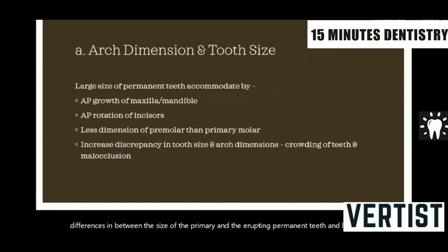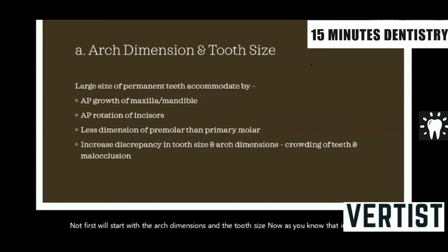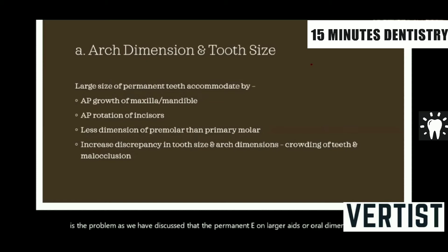We will start with arch dimensions and tooth size. In the mixed dentition period, the permanent teeth have started to erupt. The problem, as we have discussed, is that permanent teeth are larger in overall dimensions compared to primary teeth. To accommodate these teeth, the jaws have to increase in size. The jaws will accommodate the larger permanent teeth by increasing in the anterior-posterior direction.